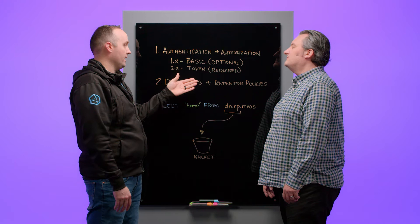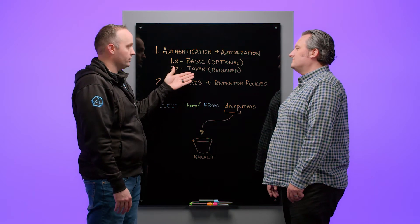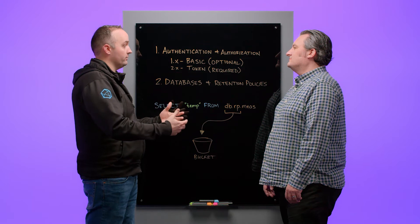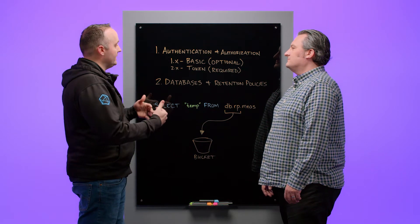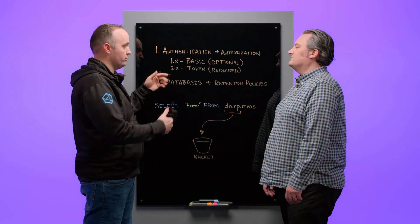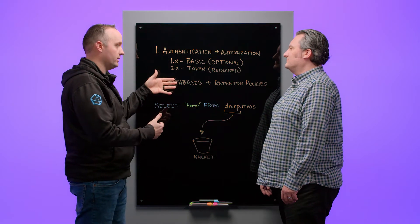With 2.x and InfluxDB Cloud, authentication is required. And it's done using token authentication. So in order to authenticate with a 2.x database or with InfluxDB Cloud, you need either one to map a username and password combination to a token or just use token authentication.